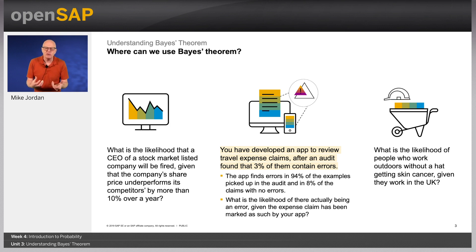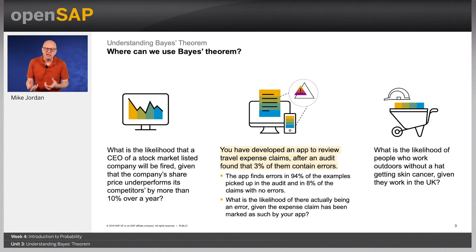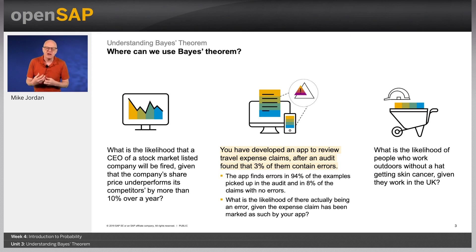What is the likelihood of people working outside without a hat getting skin cancer in the UK? The key word here is 'given'. Each calculation is dependent on another probability.